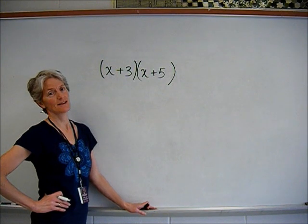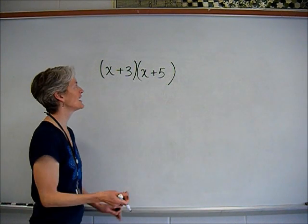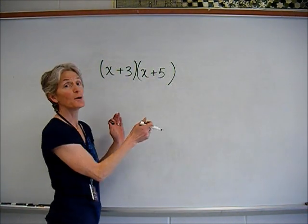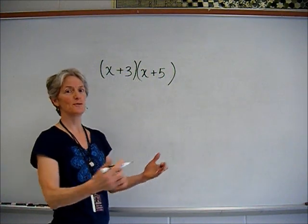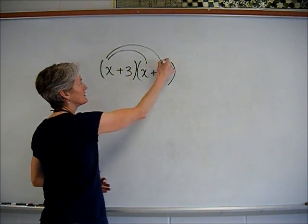Let's say I want to multiply these together. Okay, here we go. So of course I've got two binomials, so I have to double distribute, also known as FOIL.